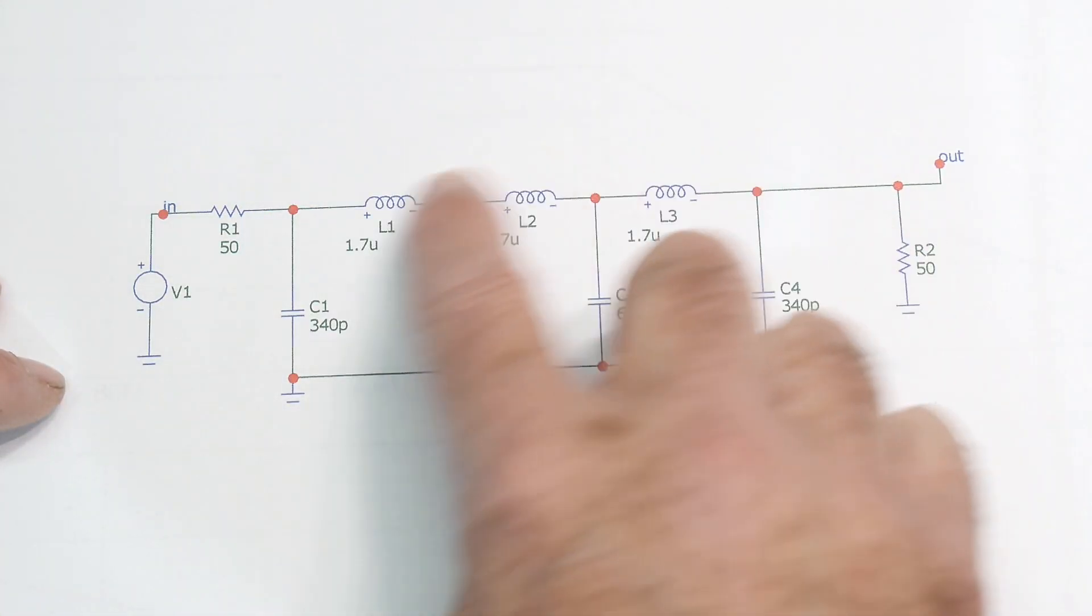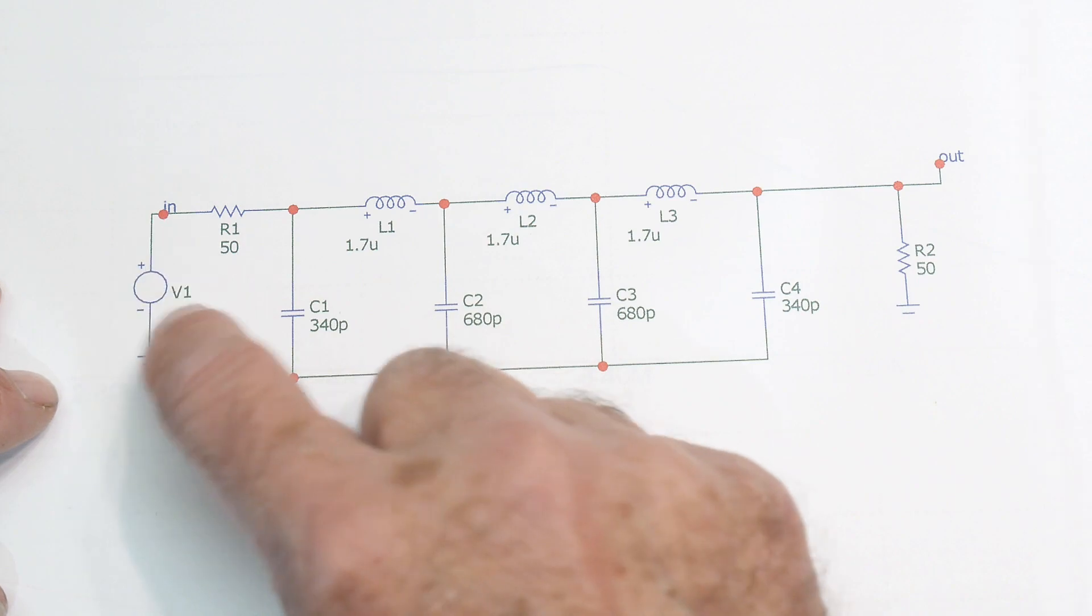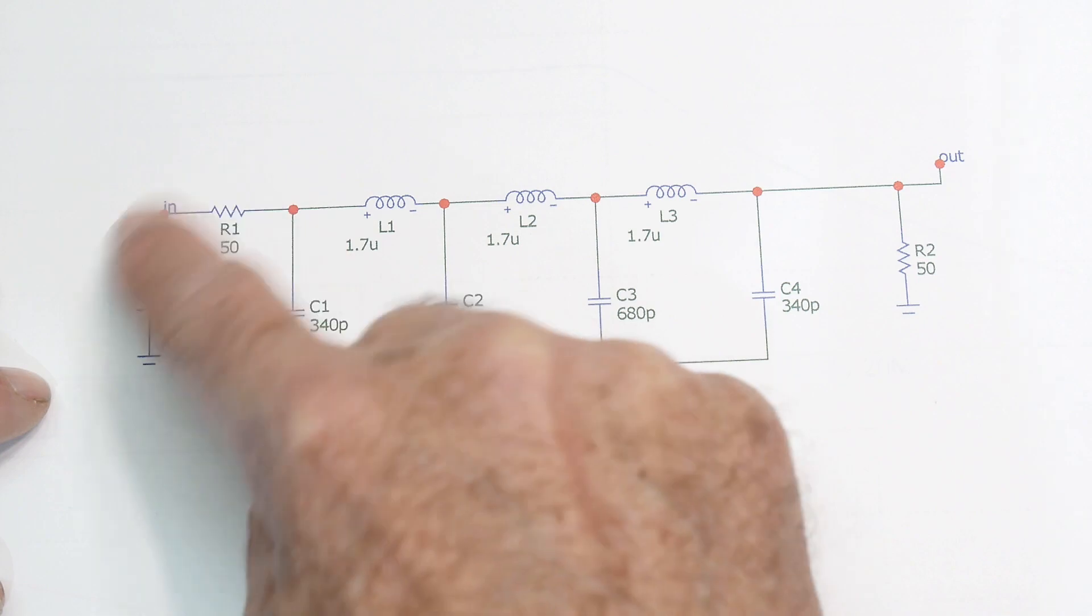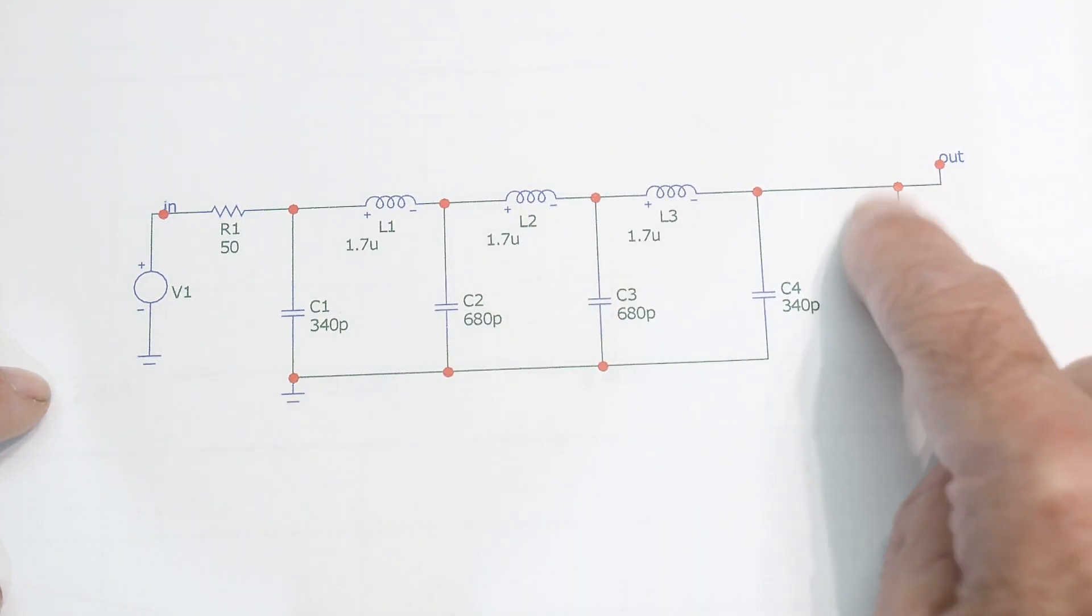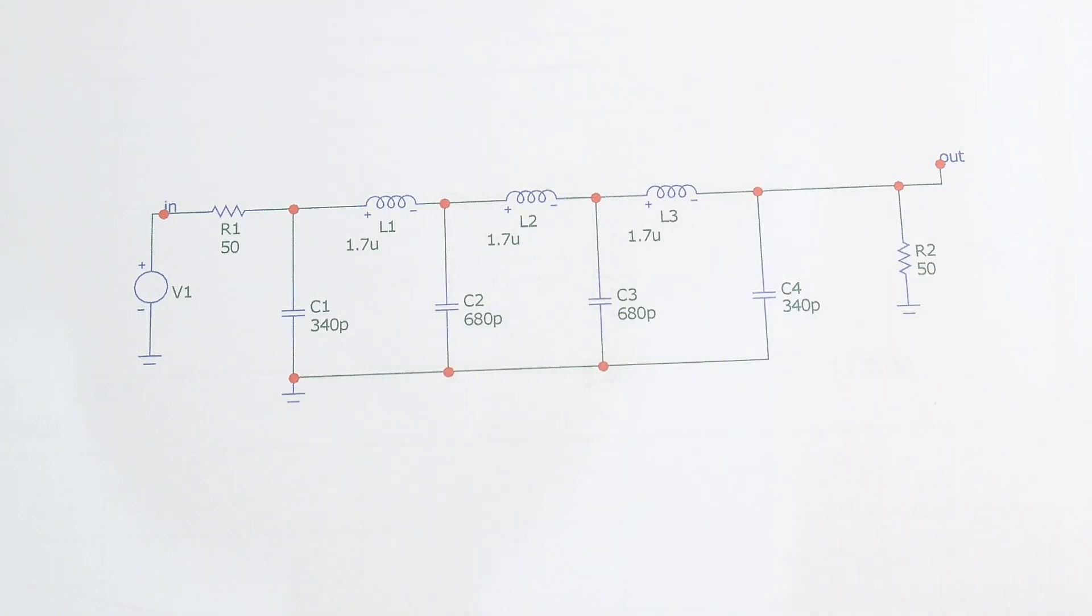If you put in a voltage source, make sure you put in a 50 ohm resistor here to make it a 50 ohm impedance on the input, and then put a 50 ohm on the output so it measures correctly.